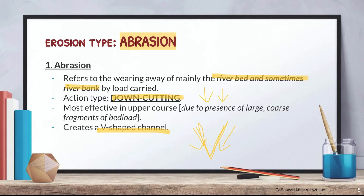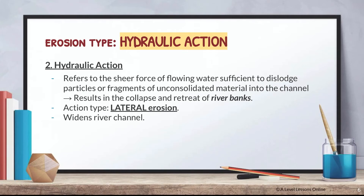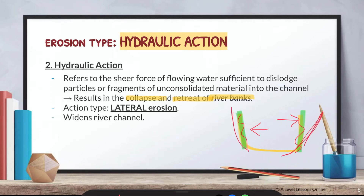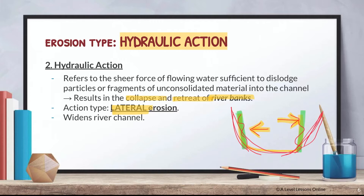Hydraulic action tends to hit the river banks — the sides of the river. It refers to the sheer force of flowing water sufficient to dislodge particles or fragments of unconsolidated material into the channel, resulting in the collapse and retreat of river banks. This erosion hitting the sides can cause the river bank to collapse, resulting in a U-shaped river channel. It is a form of lateral erosion, widening the river channel horizontally.